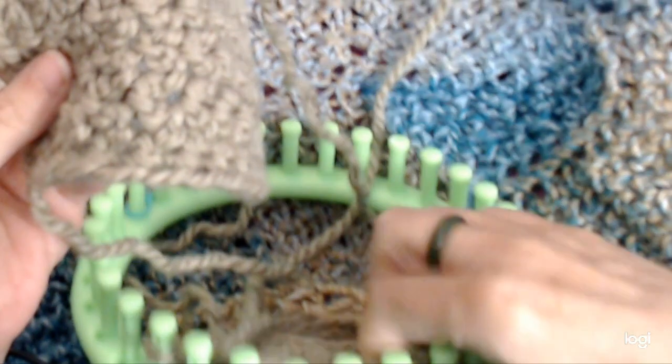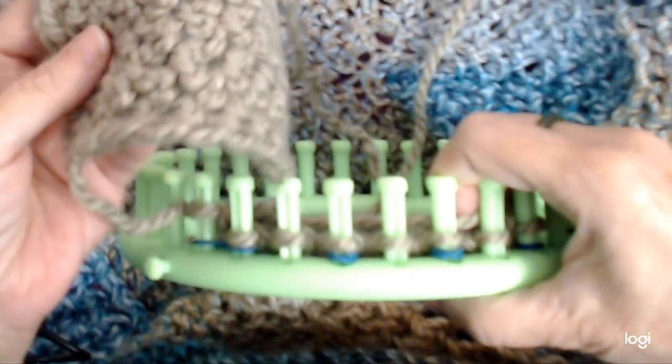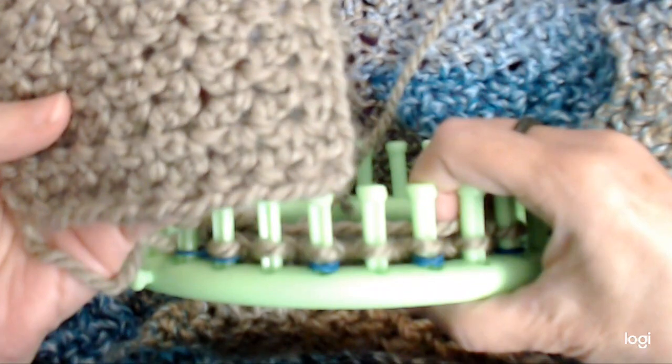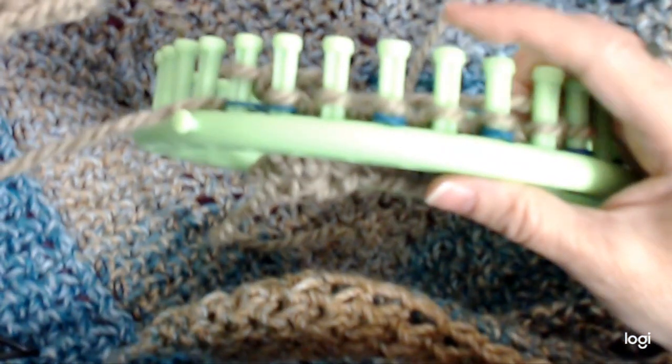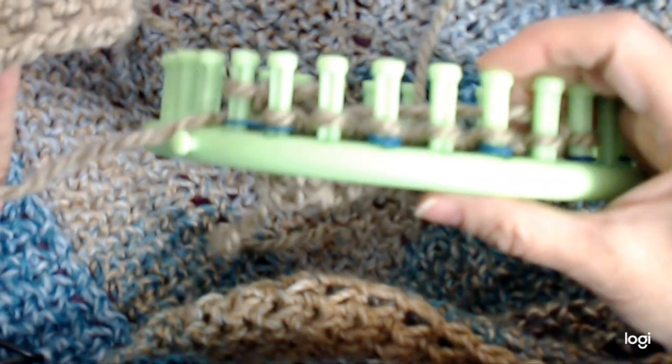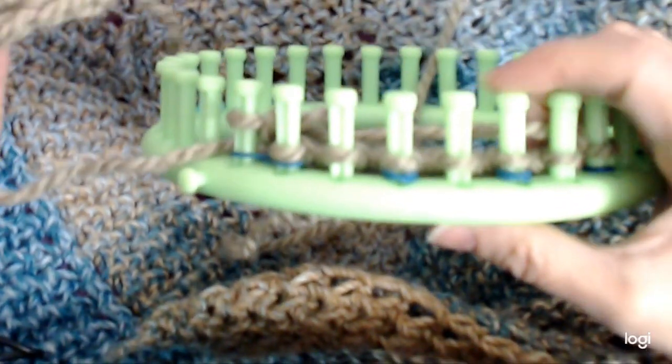This was done on this green gauge here. This is Charisma, and it's a number five bulky you can get at Michaels. This loom is a three-quarter gauge loom - it's the one in the Darice round circle set.